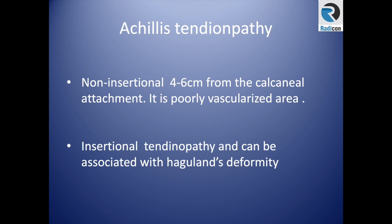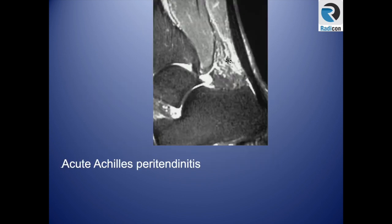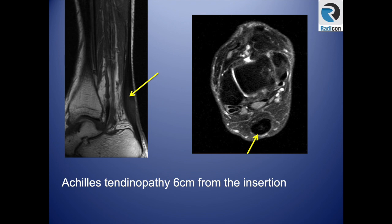Non-insertional tendinopathy is usually a few centimeters from the calcaneal attachment. The insertional part looks normal, but further along there is thickening of the tendon, related to the area of poor vascularity. In another case, the distal attachment is normal, but more proximally there is fusiform thickening. On axial view, it's not smiling anymore — this confirms non-insertional tendinopathy.